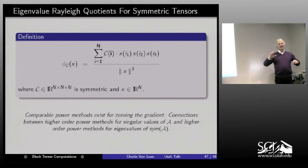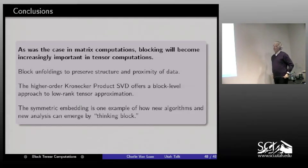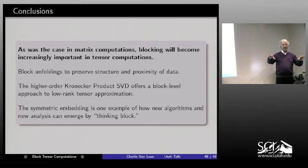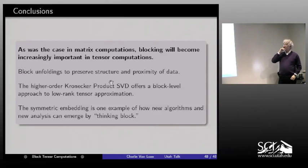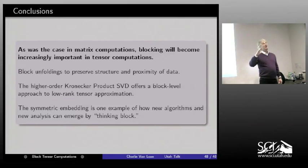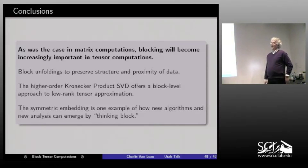The key behind all this work is to connect algorithms, which can be done through this symmetric embedding — a block tensor exercise. Let me wrap up with the high-level points. First, this is an example of how to spot commonalities across disparate settings in both algorithms and analysis through blocking. Second, the Kronecker product SVD offers a new block-level approach to low-rank tensor approximation. Third and most fundamentally, the importance of unfolding in a way that respects blocking — I'm absolutely convinced block tensor computations are going to become as important as block matrix computations are right now.